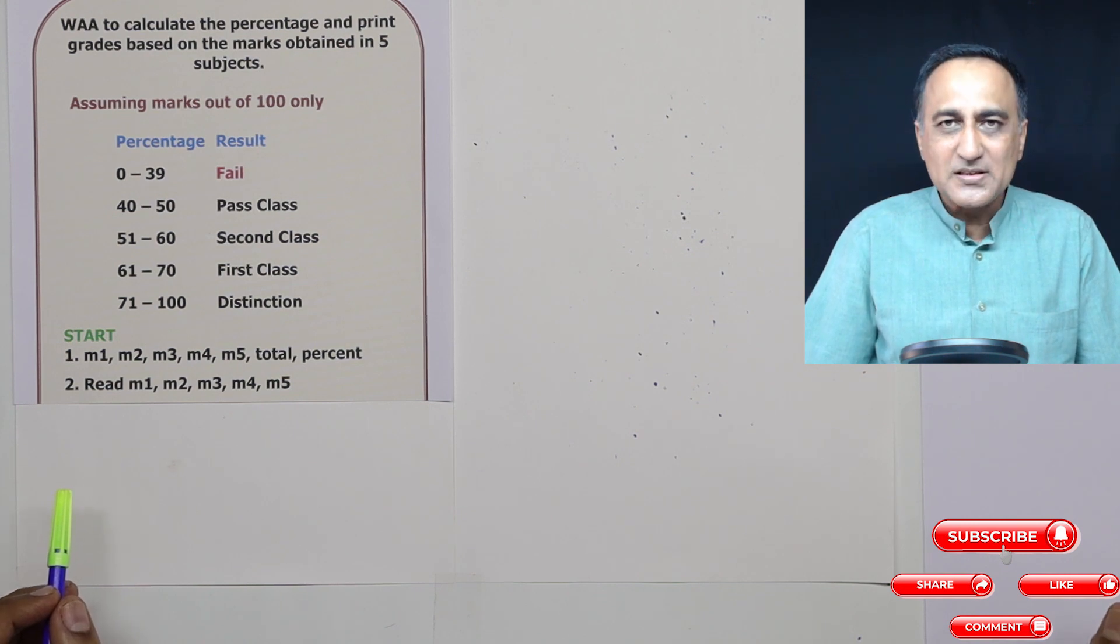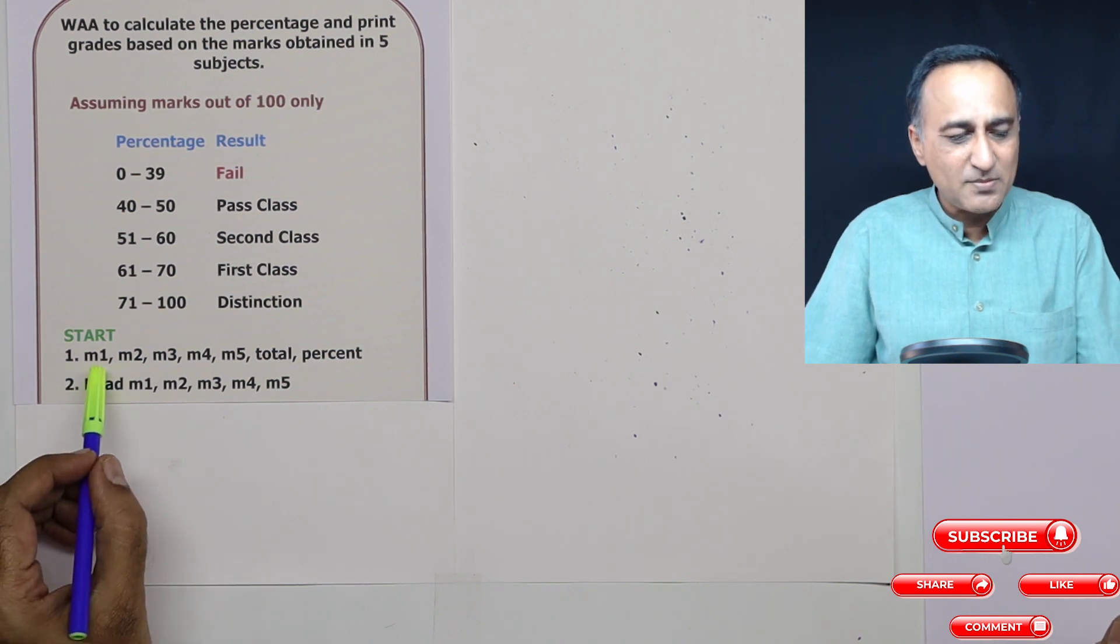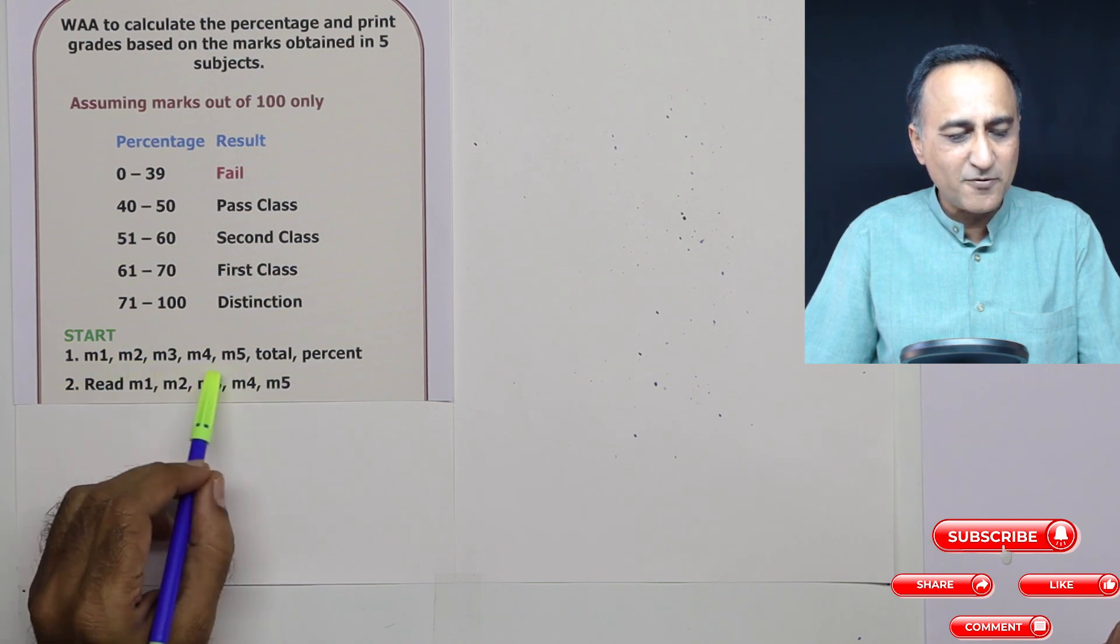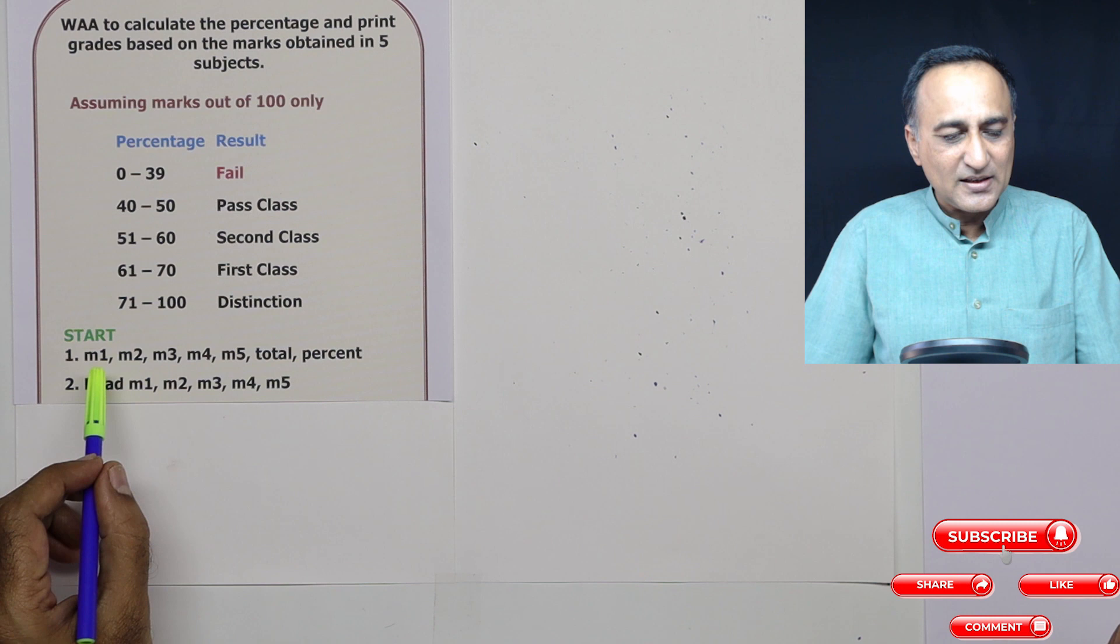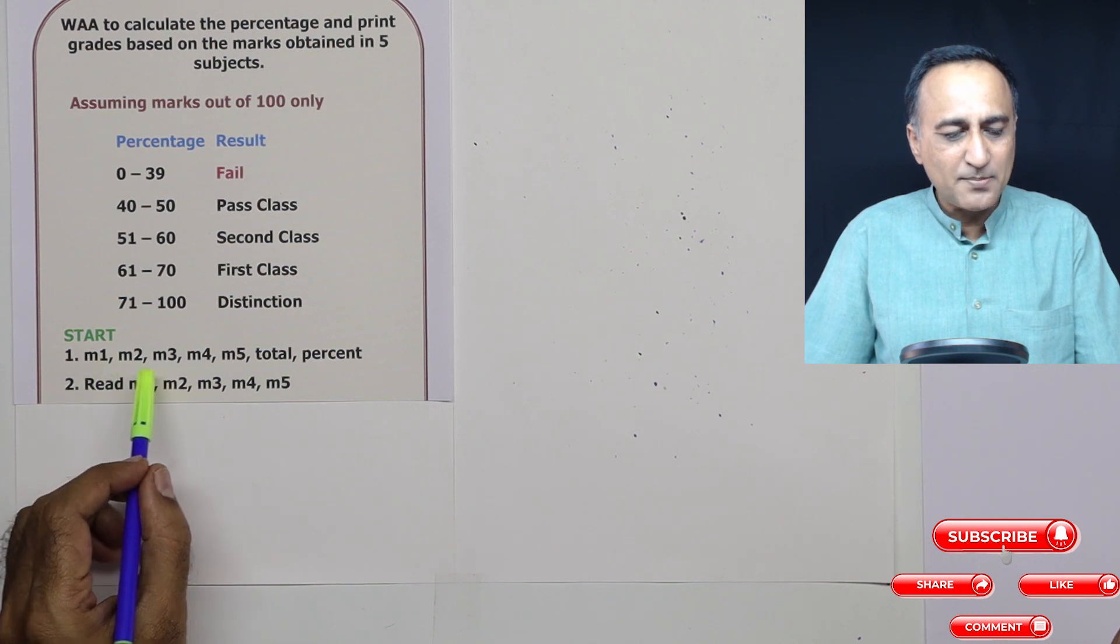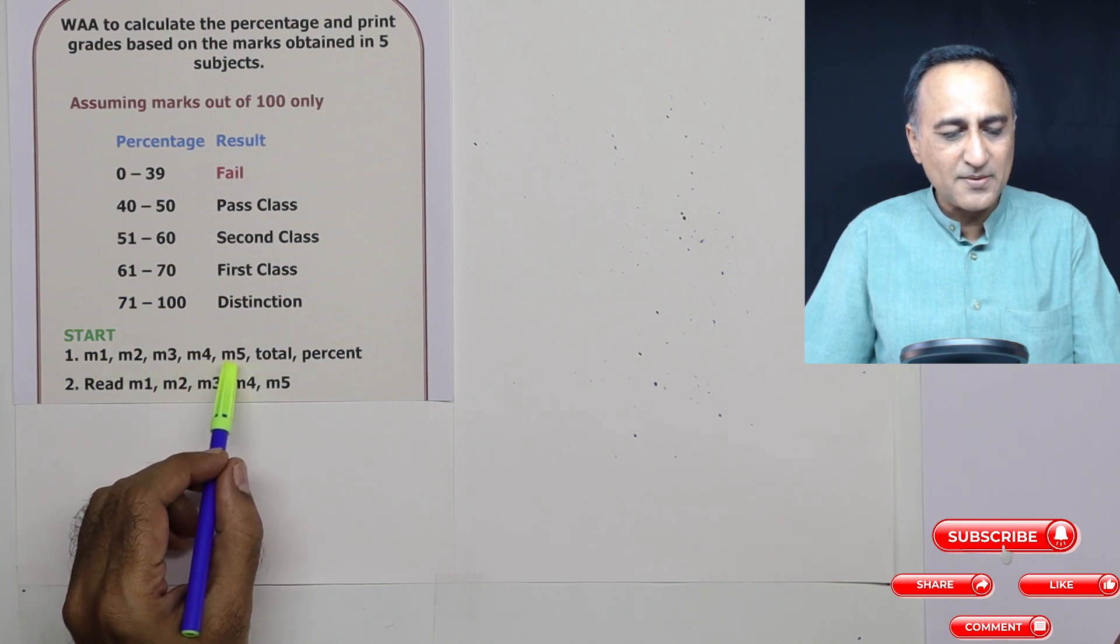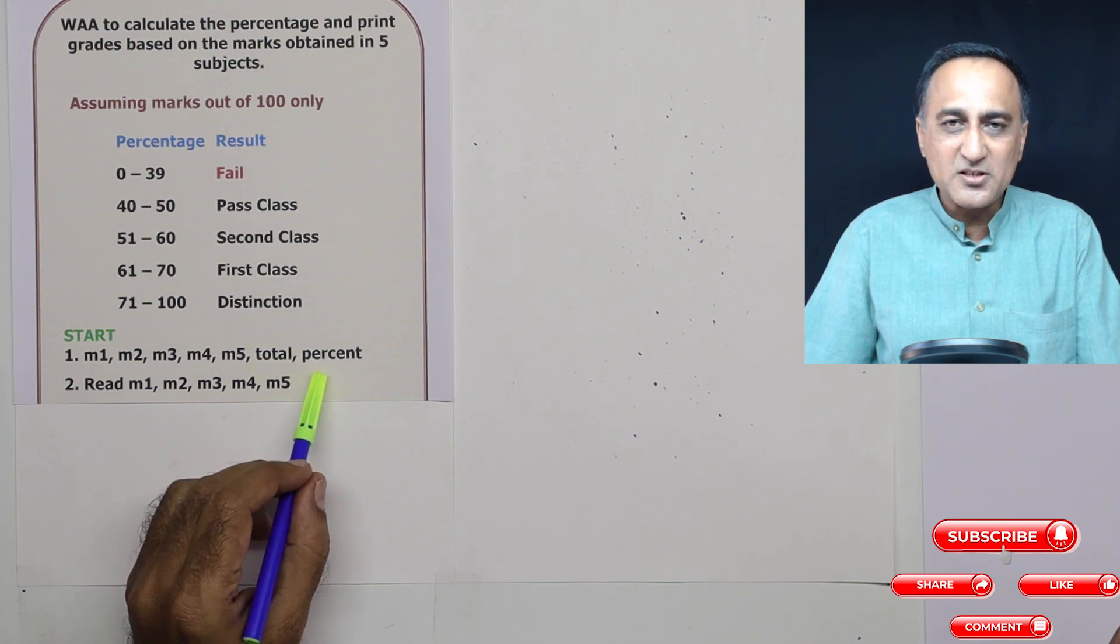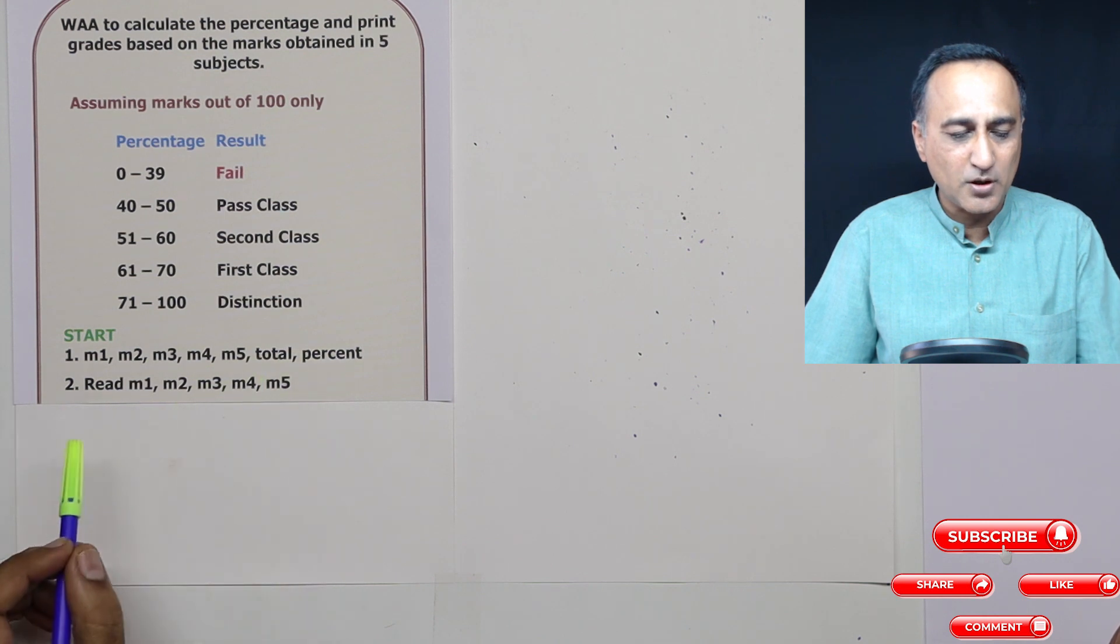Now what I am doing is, in order to store the marks of the five subjects, I have to reserve five memory locations and I give them the names m1, m2, m3, m4, and m5. These are the names of five variables. Then the sum of m1 plus m2 plus m3 plus m4 plus m5 is going to hold in a variable called total, and percentage is used to calculate the percent based on the total.